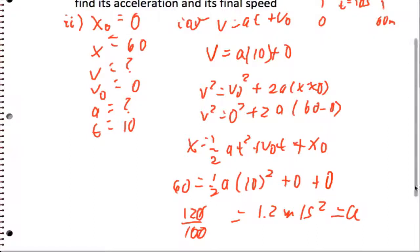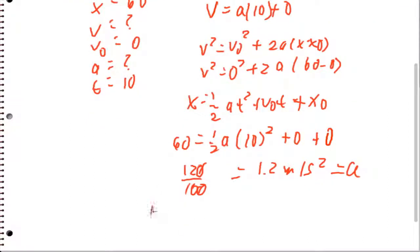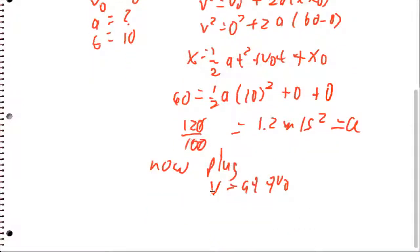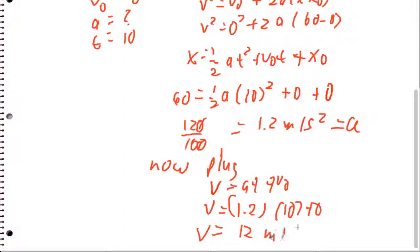Now plugging that into the first formula: V equals AT plus V-naught, so V equals 1.2 times 10 plus 0. V ends up being 12 meters per second as our final answer. That's worksheet number three worked out, and I'm going to put all this up on the website.